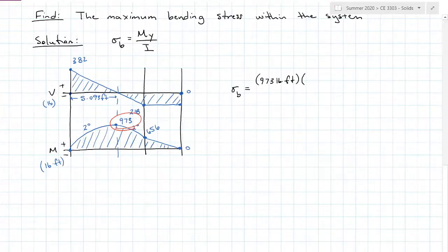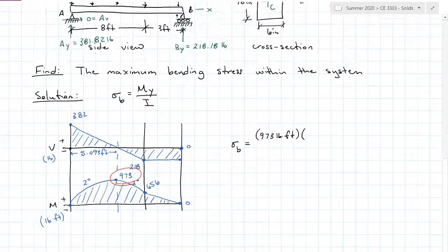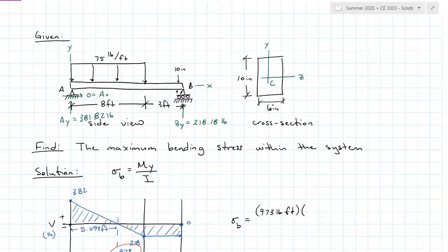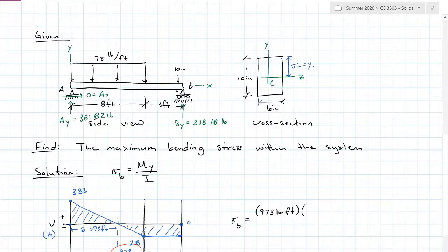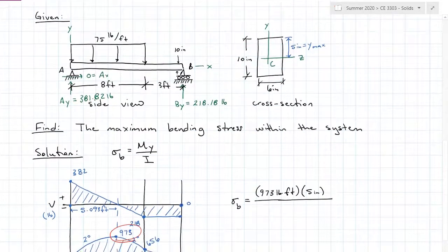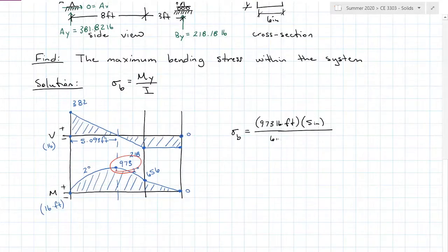Next up is y — the distance from the centroidal axis of the cross section. The furthest distance I can get from the center of this cross section is 5 inches. This is a symmetric cross section, so the neutral axis is at 5 inches, and y_max is also 5 inches. The last component is the moment of inertia about the cross section's centroid. For a rectangle, I equals base times height cubed divided by 12, which gives 6 inches times 10 inches cubed divided by 12.